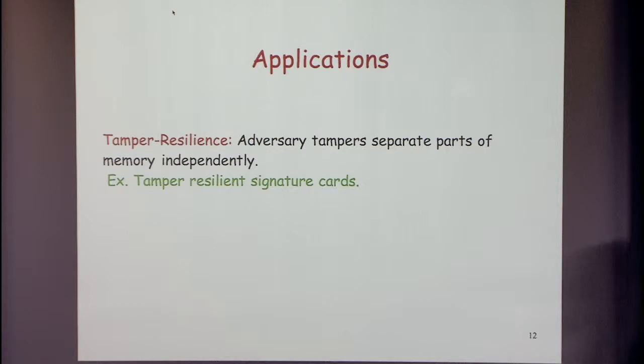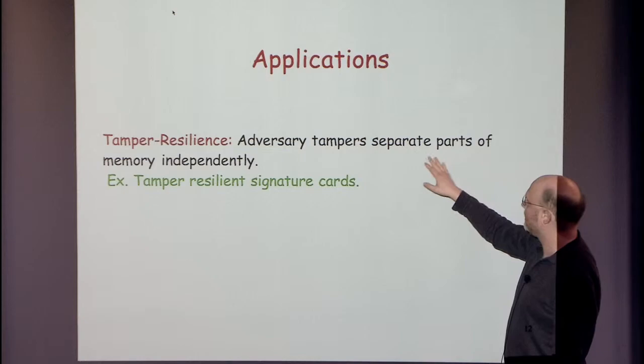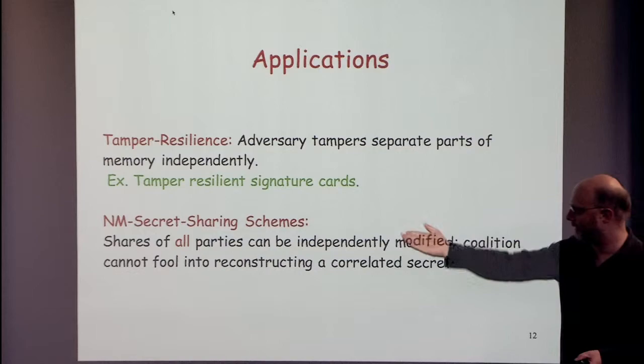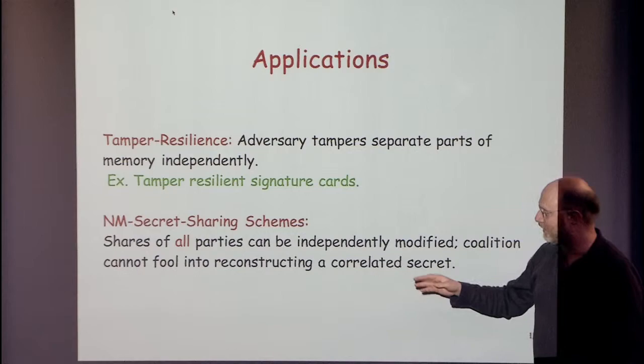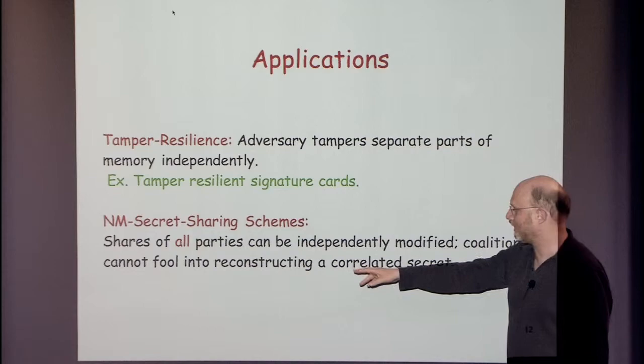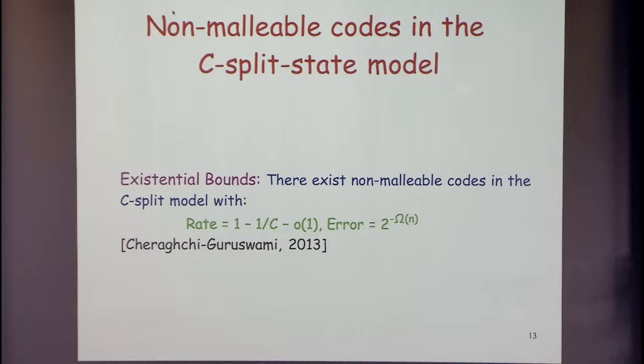We want to handle these functions. The motivation is cryptographic — it's useful in tamper resilience, where an adversary tampers separate parts of memory independently. There's also non-malleable secret sharing, where the shares of all parties can be independently modified — usually devastating to a secret sharing scheme — but the coalition still can't be fooled into reconstructing a correlated secret.